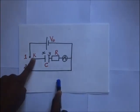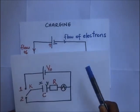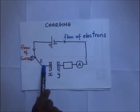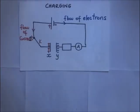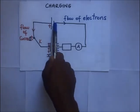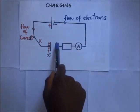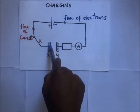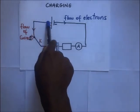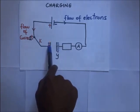The charging process occurs when we connect switch key to terminal one. Electrons flow from the negative terminal of the battery to plate Y. Because the negative terminal repels electrons, they concentrate on plate Y, making it negatively charged. Meanwhile, the positive terminal attracts electrons away from plate X, leaving an excess of positive charges there, so plate X becomes positively charged.